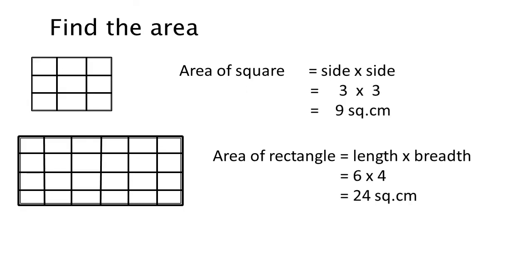Coming to the next slide, let us find the area of these different figures and shapes. First shape is a square. Area of square is equal to side into side. On your screen it may not look exactly like a square, but when you are writing in the notebook, you have to draw a proper square with the help of scale and pencil. The side measurement is 3 centimeter. So, 3 into 3 — nine square centimeter is the area of the square.